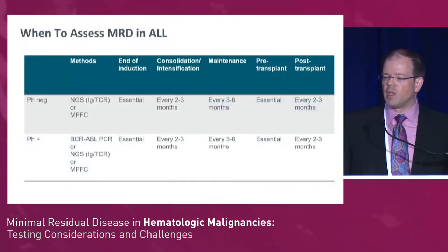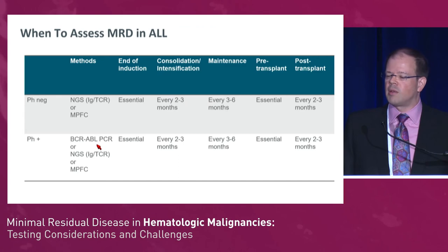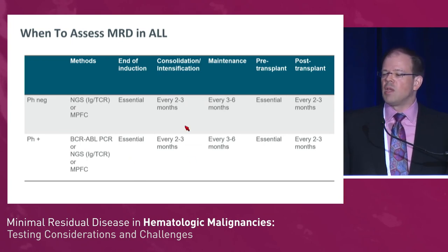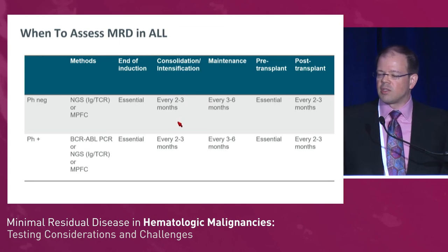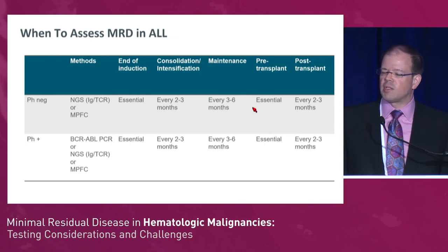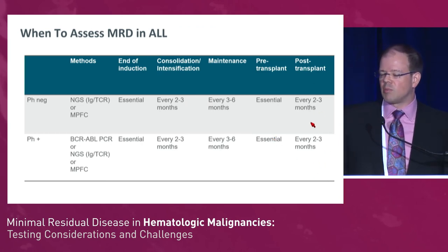Many of us are putting MRD-positive transplant-ineligible patients on maintenance therapy. To summarize for both PH-negative and PH-positive ALL: you can use BCR-ABL quantitative PCR for PH-positive disease, as well as next-generation immune receptor approaches and multi-parameter flow cytometry. It is absolutely essential to assess MRD at the end of induction. NCCN guidelines and other consensus statements recommend that every two to three months thereafter you verify MRD-negative patients remain negative and change therapy if there is MRD progression. In maintenance, assessment every three to six months can be useful. Pre-transplant assessment is essential given blinatumomab's approval as a bridge to transplant, and post-transplant assessment every two to three months can guide immune suppression tapers and other maneuvers to eradicate disease.